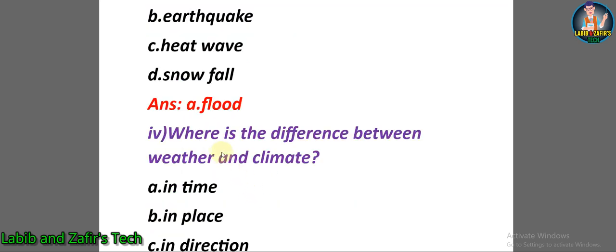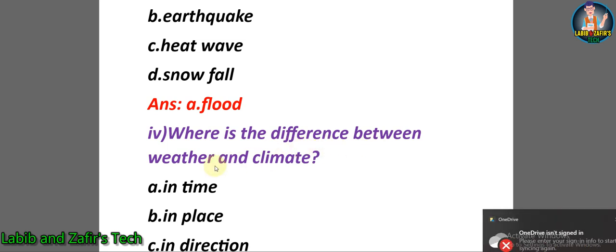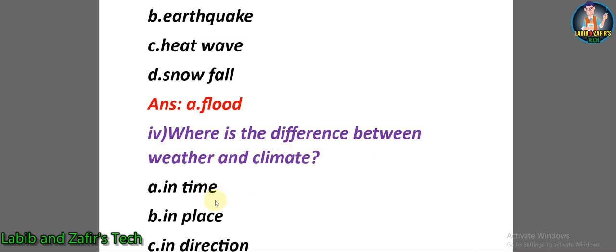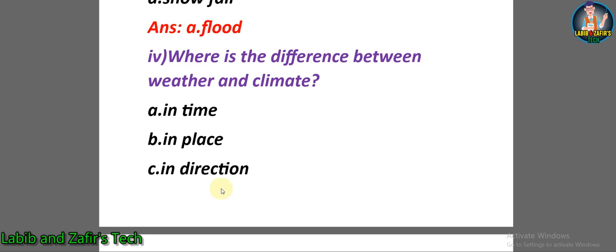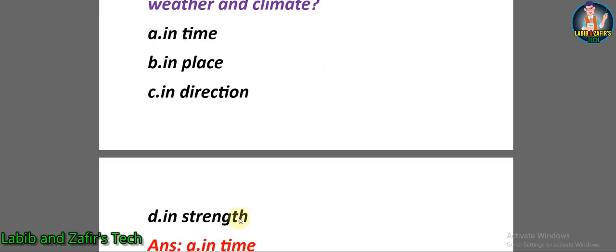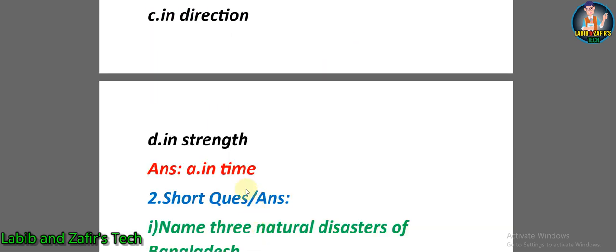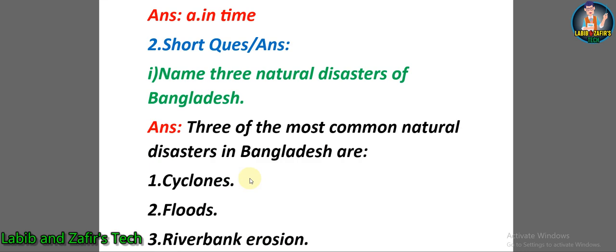MCQ number four: Where is the difference between weather and climate? A) In time, B) in place, C) in direction, D) in strain. The answer is A — in time. Now let's go through some short question answers.